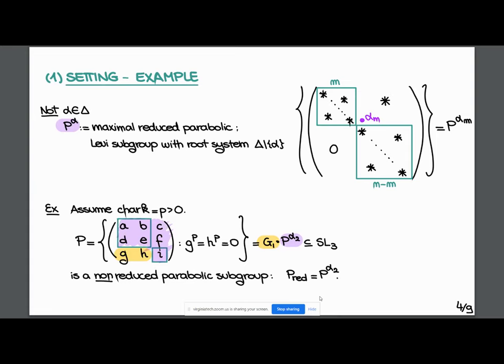In prime characteristic, this is an example of a parabolic subgroup whose reduced parabolic is the one associated to alpha_2, which is not reduced. How do we get the non-reducedness? We multiply by a Frobenius kernel by adding the condition on coefficients G and H: to the p power equal to zero. This is non-reduced, and its reduced subgroup is P_alpha_2.